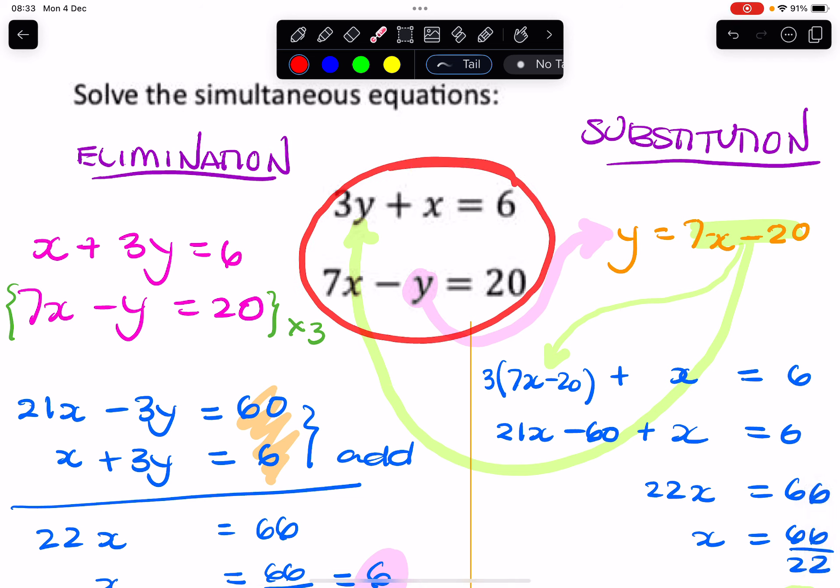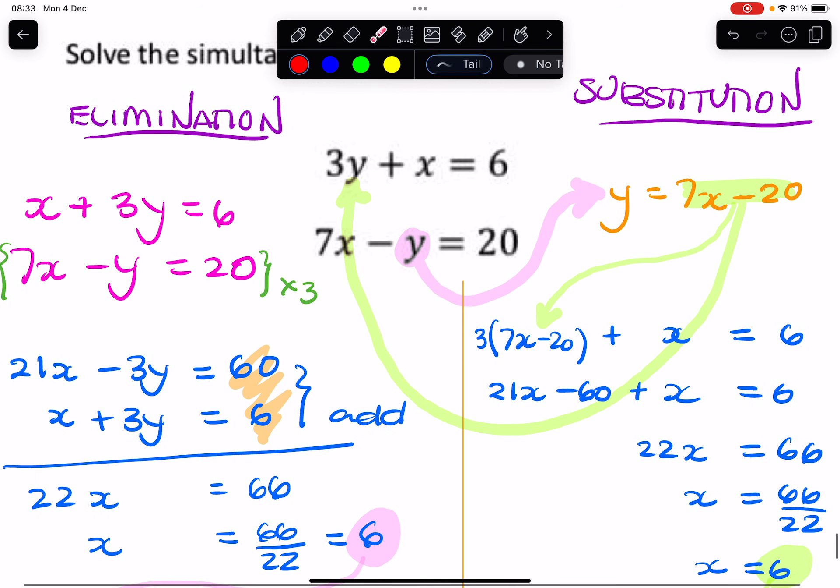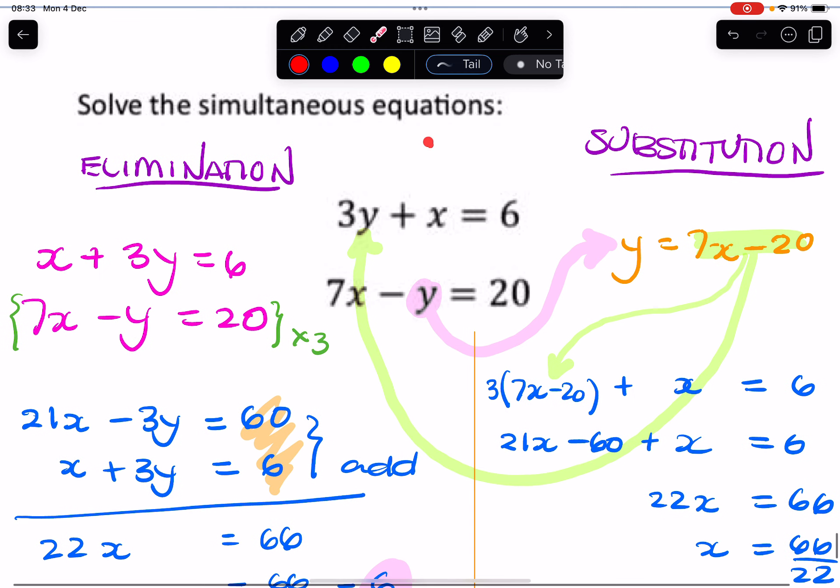So whenever you have a pair of simultaneous equations, if it's linear, that means there's no squared or cubed or 1 over x or cosine x. If it's just a linear expression like this, sometimes you can use elimination, otherwise substitution always works. Okay, I hope you found that helpful.